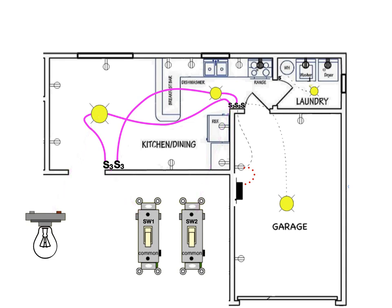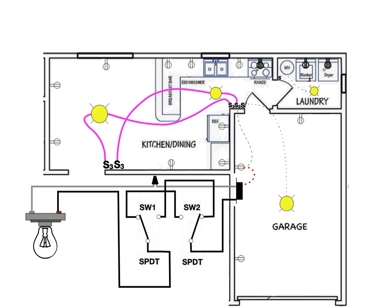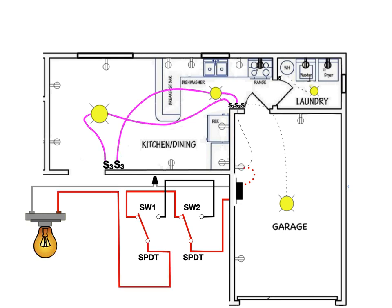Switch number two is being fed with power from a hot wire connected to its common terminal. Switch number one's common terminal is connected to the hot terminal of the light. Neutral is connected to the neutral terminal of the light. The carrier terminals of the switches are connected in parallel. A three-way switch is a single-pole, double-throw type of switch. I am going to color-code the wires red that are electrically hot, or at 120 volts, for various positions of the switches. With the switches in this position, the light is off. Toggling switch number one carries 120 volts all the way to the light — the light is now on. When switch number two is toggled, the hot circuit to the light is interrupted and the light is off again. Toggling switch number one again completes the circuit to the light.